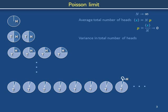We will now calculate the variance in the total number of heads. Because we are investigating a series of coin tosses or Bernoulli trials, we are looking at a binomial distribution. As shown in the last video, the variance of a binomial distribution is N times p times 1 minus p. Substituting p equals the expectation of x over N into the variance expression and canceling copies of N, we recognize that N in the denominator within the parentheses grows arbitrarily large compared to the constant expectation of x, so the quantity in parentheses approaches unity. Therefore, the variance equals the mean.